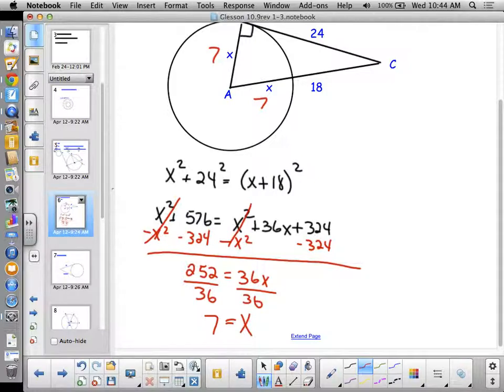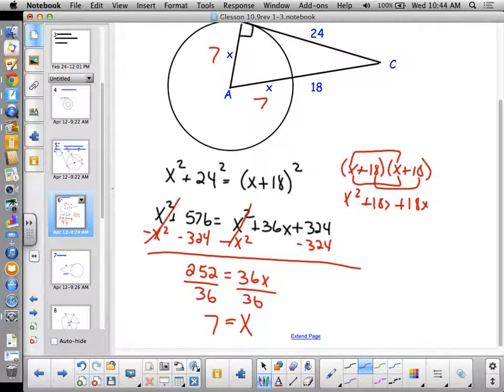That's all there is to it. But it does require us to know our algebra. Do you remember that when I have a binomial squared, I actually have to foil that? So, X squared plus 18X plus 18X plus 324. Okay. It is not just X squared plus 324.